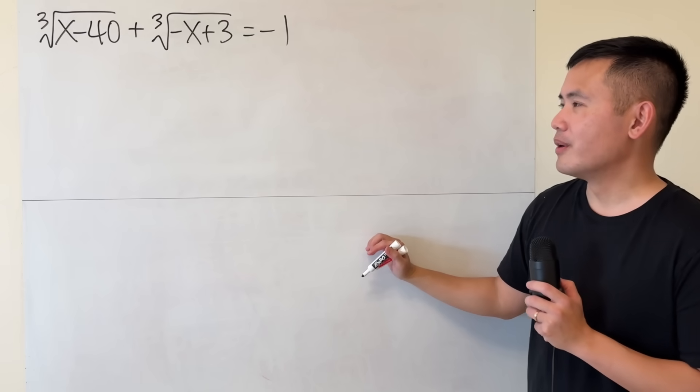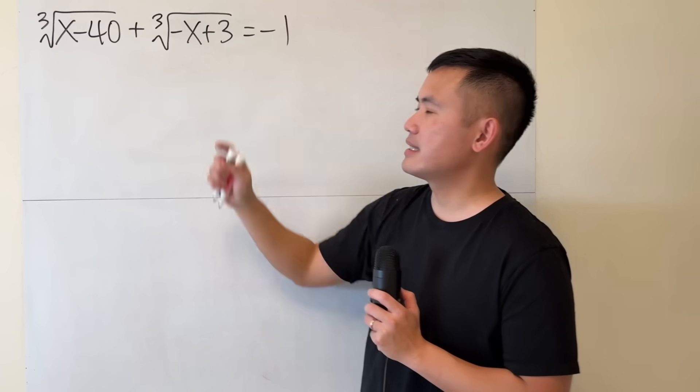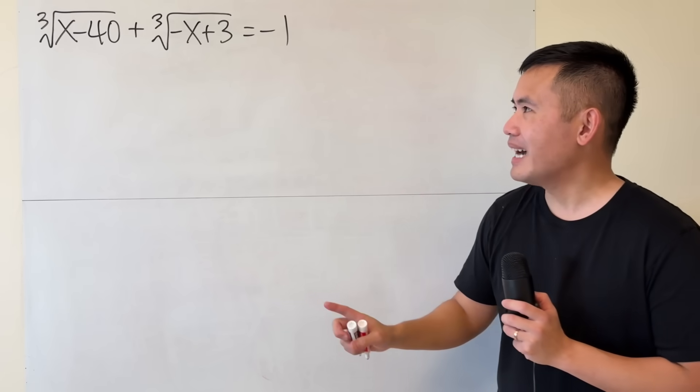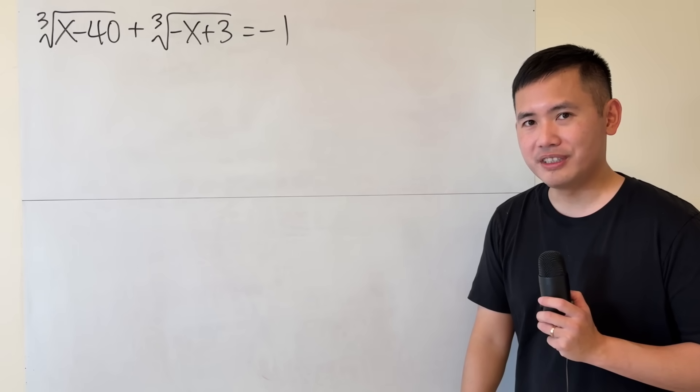Let's talk about this right here first though. The key is, notice that we have x and negative x. They are just zero if you combine them, right? But both of them are inside of cube roots. So how do we really proceed?